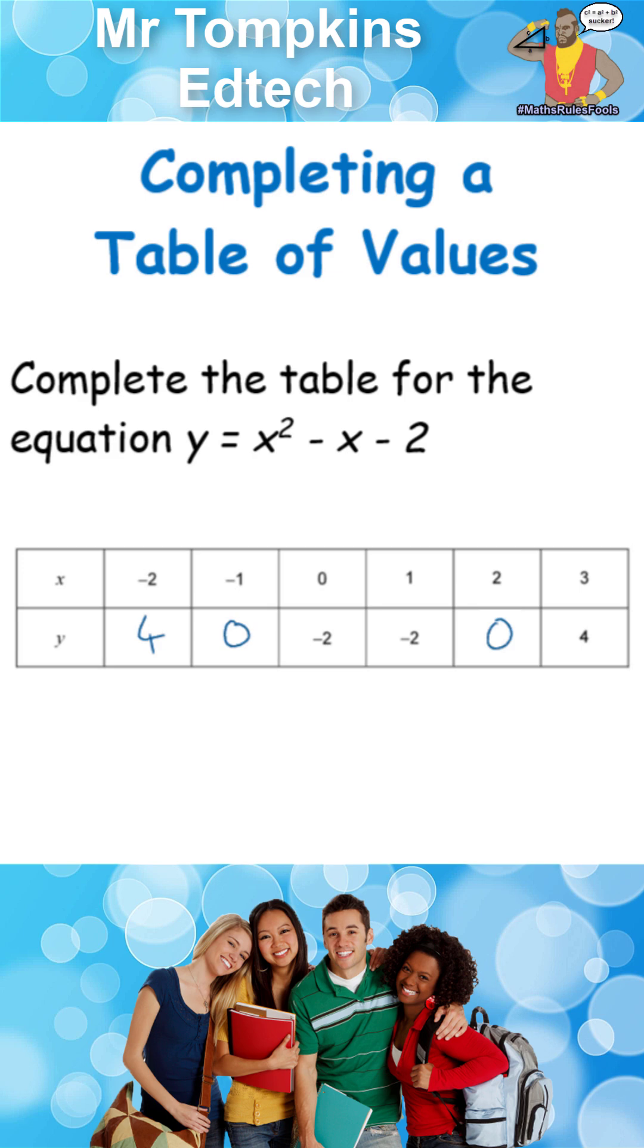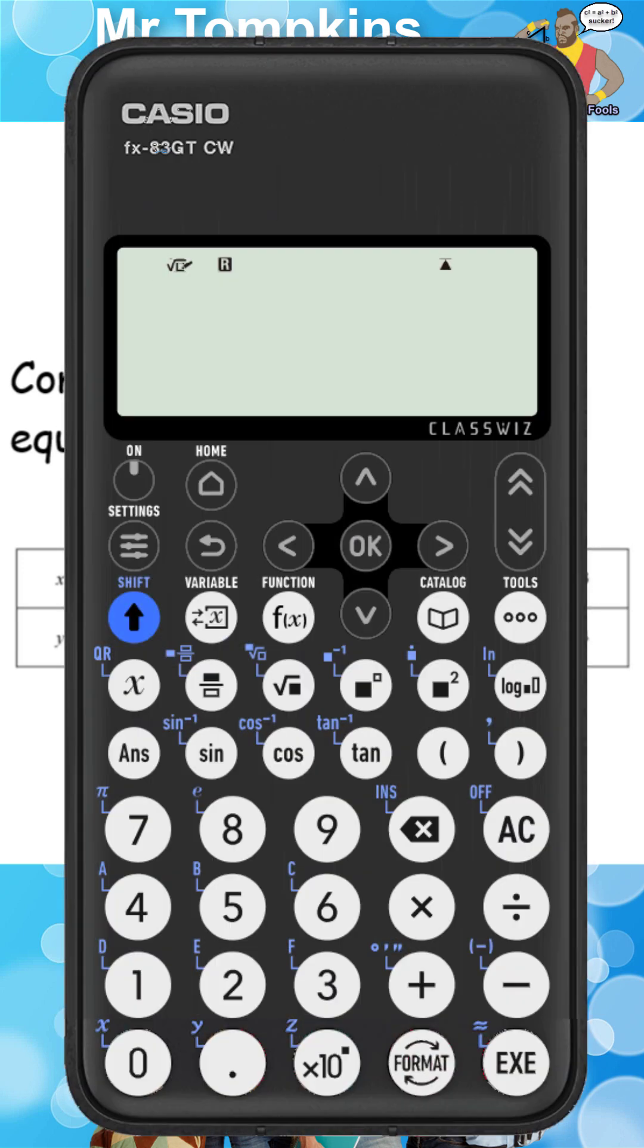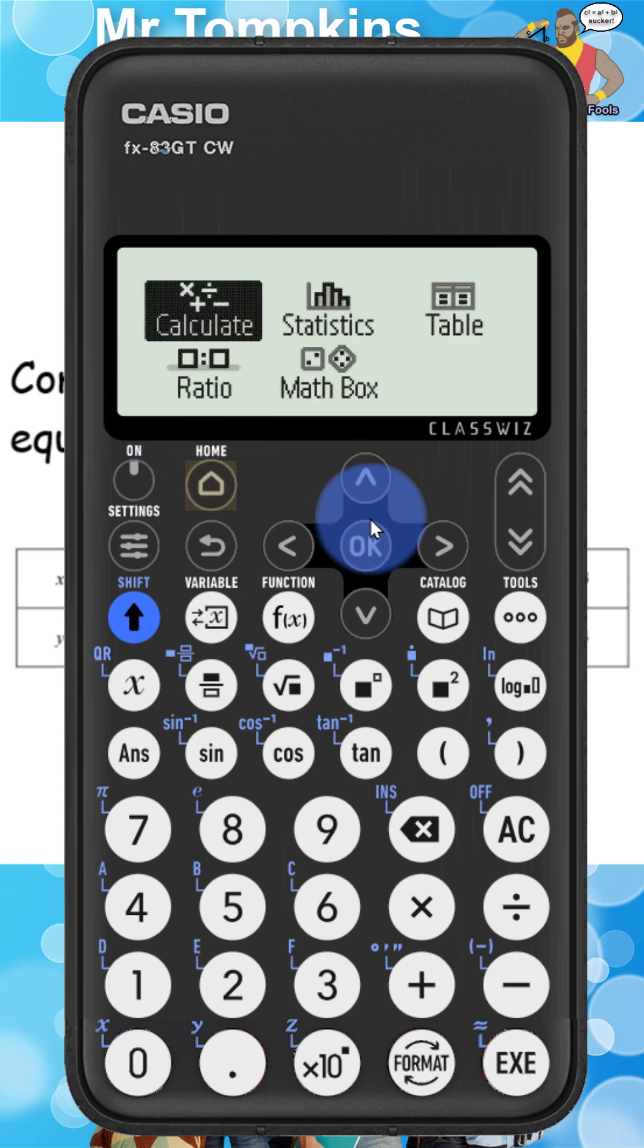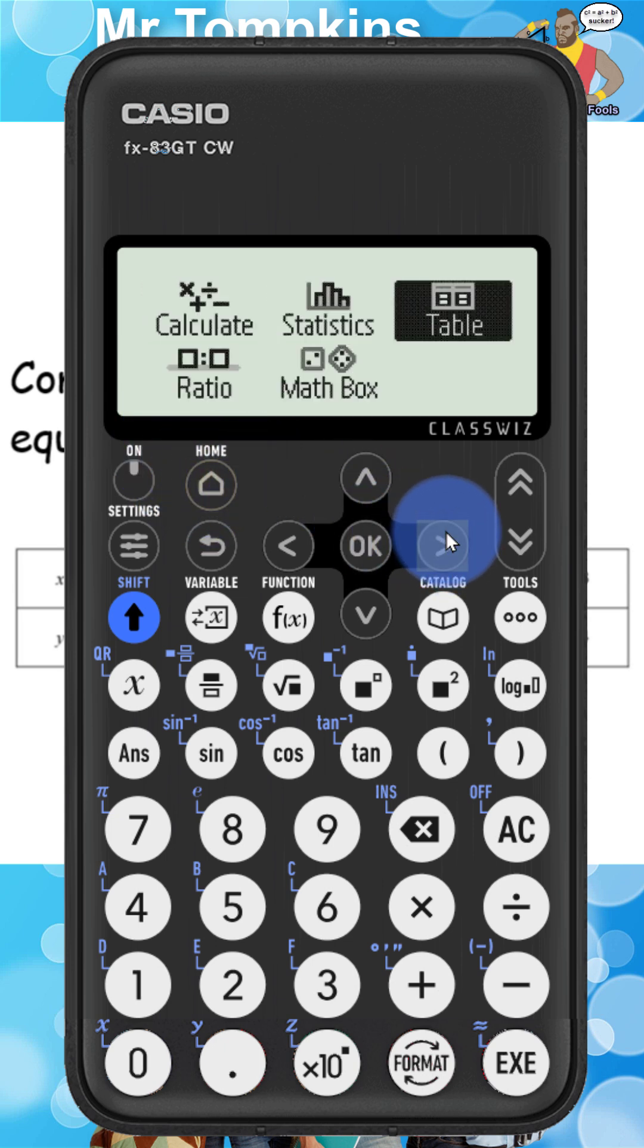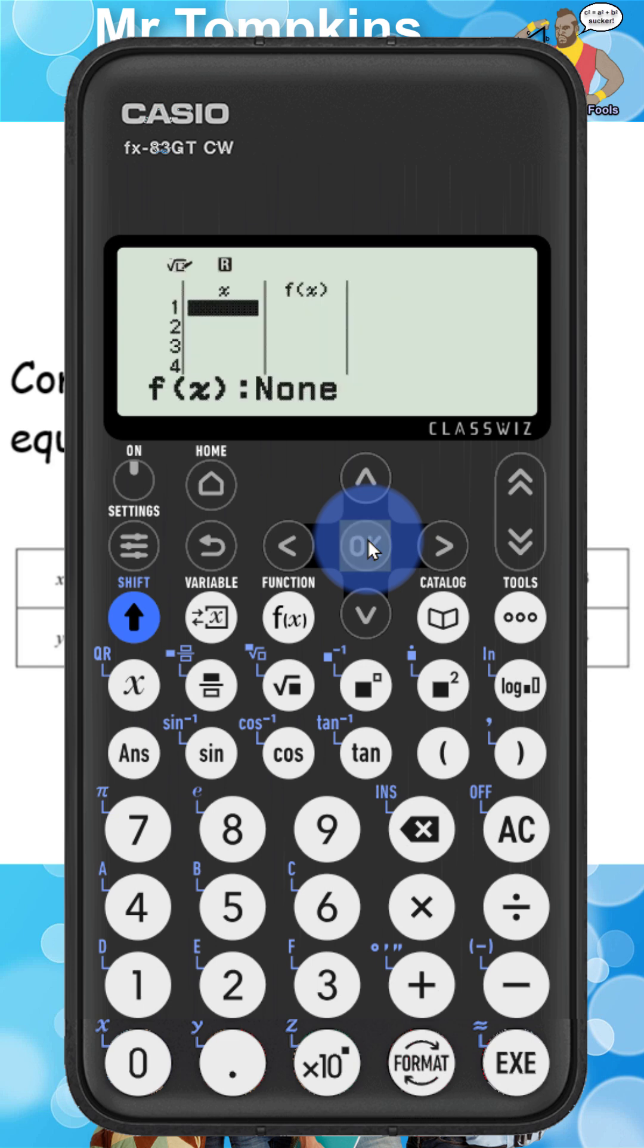Now onto the new calculator. The method is slightly different. We start by pressing the home key and then using the arrow keys to go across the table and then press execute.